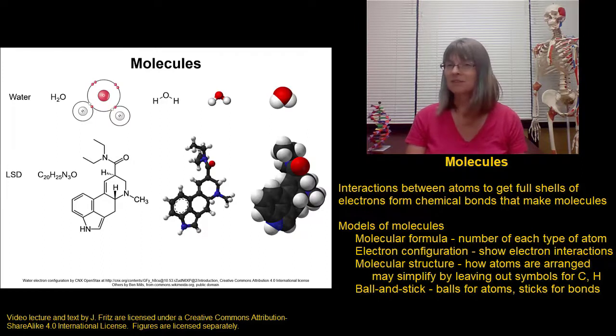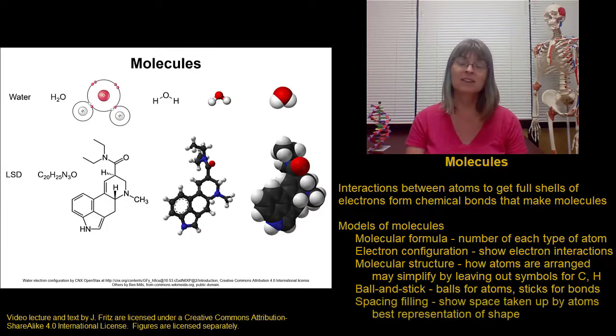But even this doesn't always give us a good idea of the actual shape of a molecule. So one more model we can look at is what's called a space-filling model. In the space-filling models, we use a sphere that actually is the size of the whole atom, not just the nucleus. So it's representing the electrons as well.